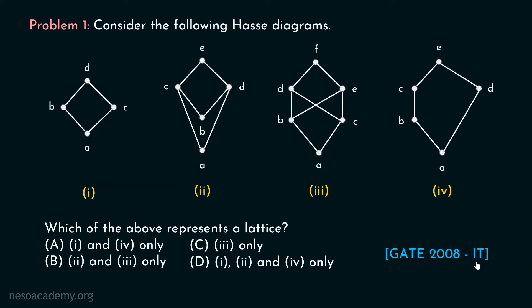I would encourage you to pause the video for a while and try to answer this question on your own. Let's move on to the solution. It is quite easy to identify whether a given Hasse diagram is a lattice or not — we have already learned this in our previous lecture. Here we are available with four different Hasse diagrams. Let's try to identify whether these Hasse diagrams are lattices or not.